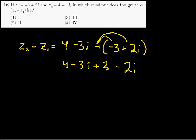Okay. So 4 minus 3i plus 3 minus 2i. That's what this equals. Well, that's going to give us 4 plus 3, that's 7, minus 3i minus 2i is minus 5i. And we want to know what quadrant this is in.